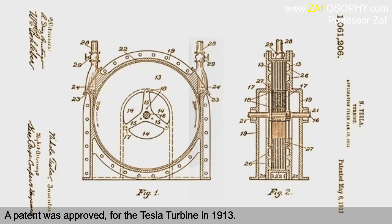A patent was approved for the Tesla turbine in 1913. Most people get excited and impressed by the Tesla turbine, but I will show that it is the most inefficient device for transforming kinetic energy of a fluid.